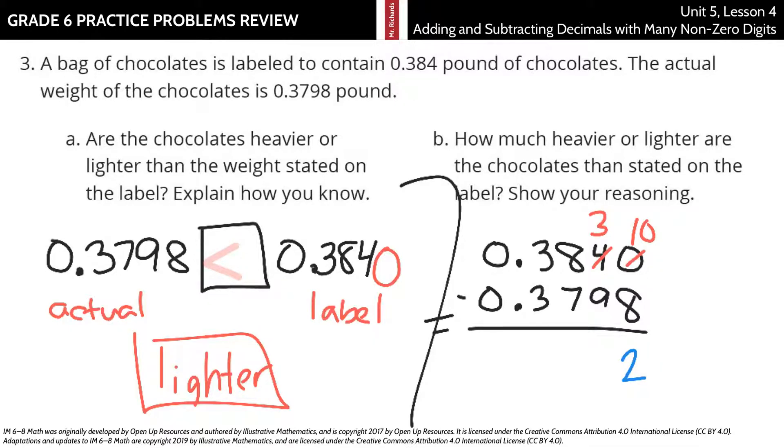We're going to have to borrow here from the hundredths place. Add ten there. And so, now we have thirteen minus nine is four. Seven minus seven, zero. Three minus three, zero. Decimal point comes straight down.